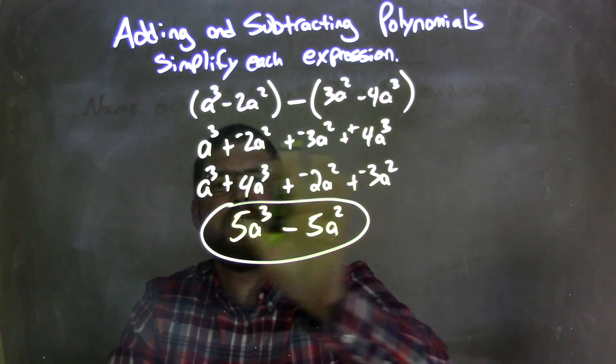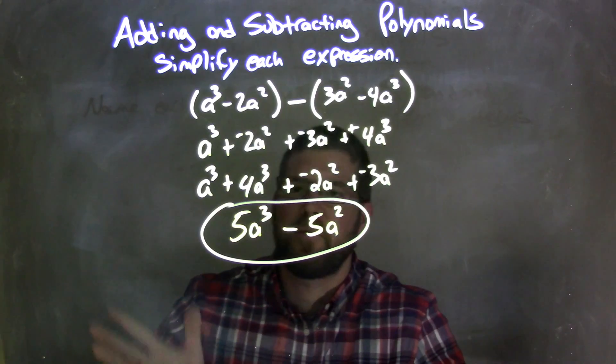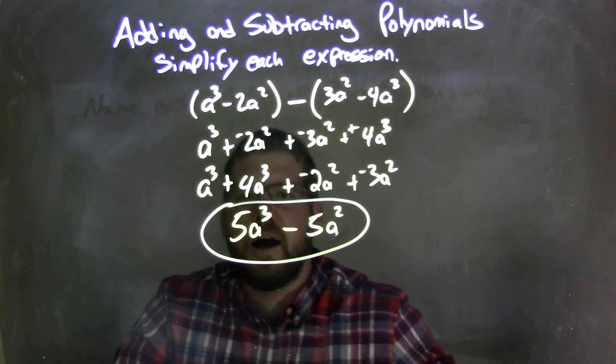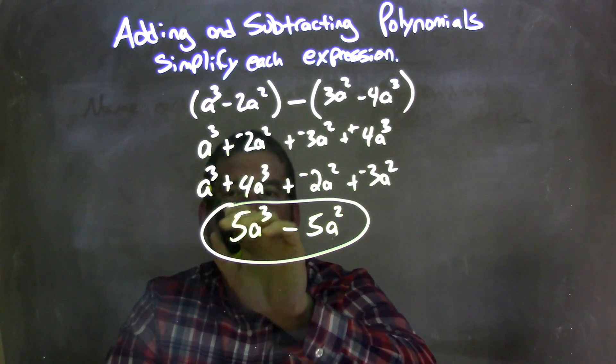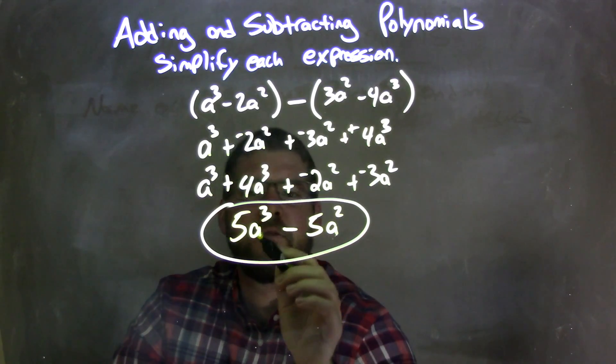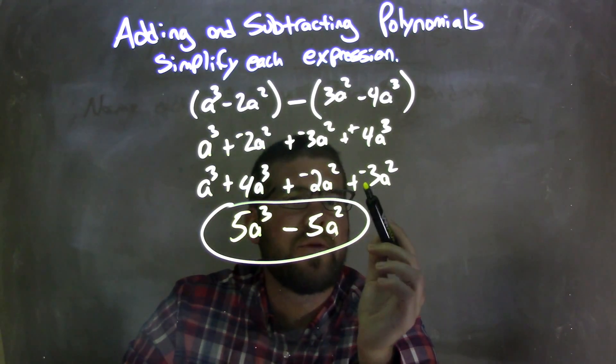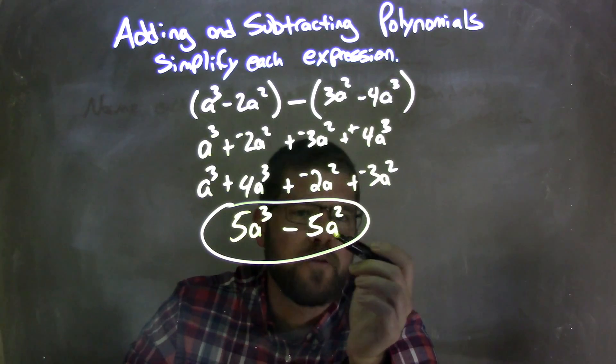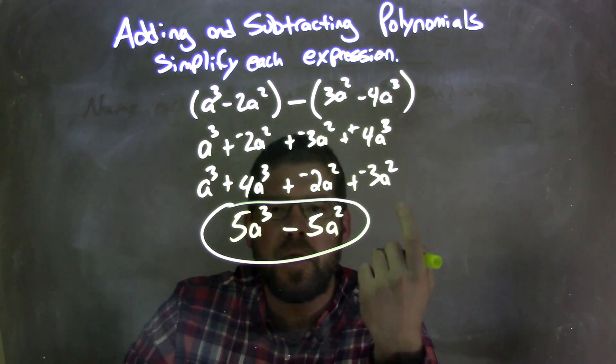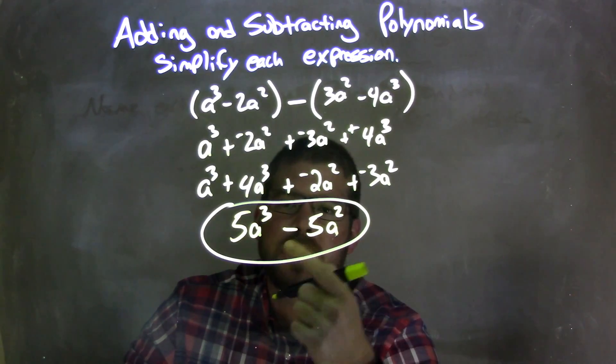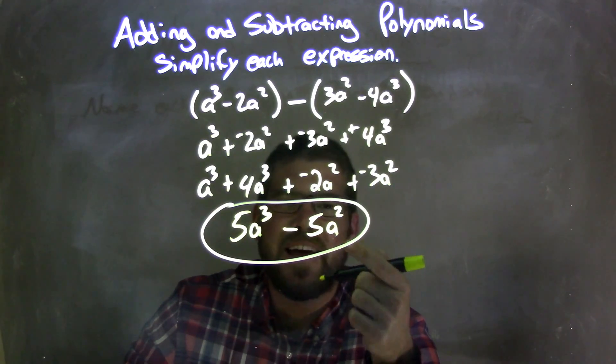Then I rearrange, having all my a to the thirds first, then a to the second, highest degree to lowest degree. From there, I added my like terms. a to the third plus 4a to the third is 5a to the third. And negative 2a squared plus a negative 3a squared is minus 5a squared. So now we have our final answer, which is 5a to the third minus 5a squared.